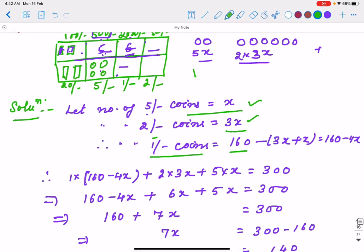Suppose I have 30 coins here and 10 coins here. I'm just supposing. So 160 minus 40 will be your 1 rupee coins. We can calculate: 1 rupee coins are 160 minus 4x.